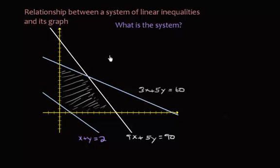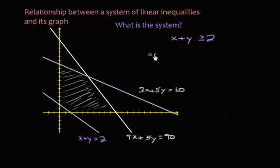In order to figure out what the system is, we have to look at each of these lines separately. So let's take a look at the first one - x plus y, the bottom one right here. Right now it equals 2, but as an inequality it's either going to be x plus y greater than or equal to 2, or x plus y less than or equal to 2.